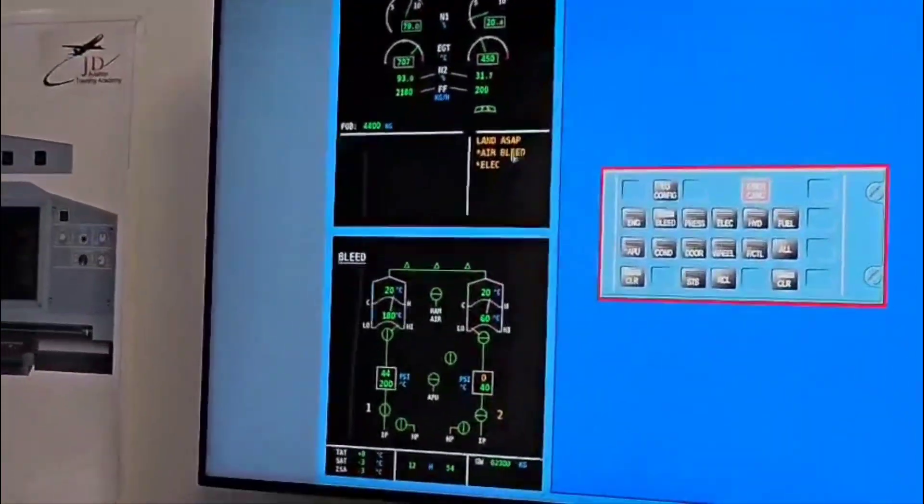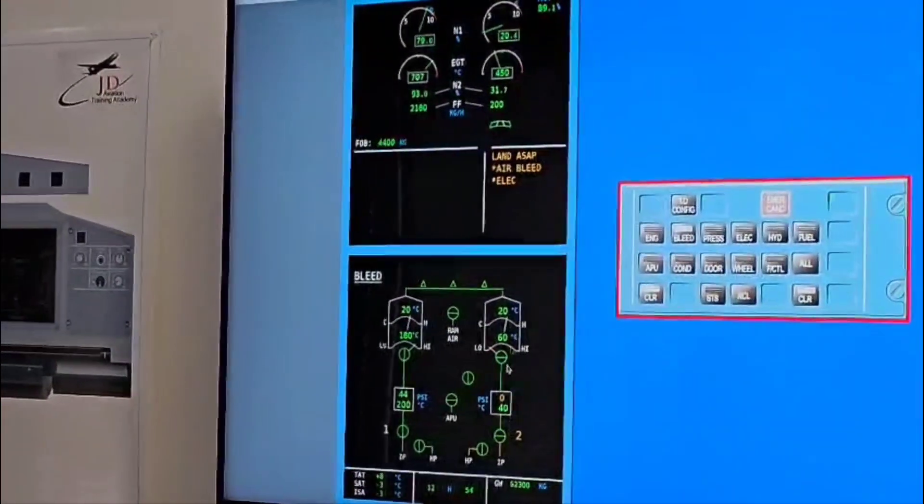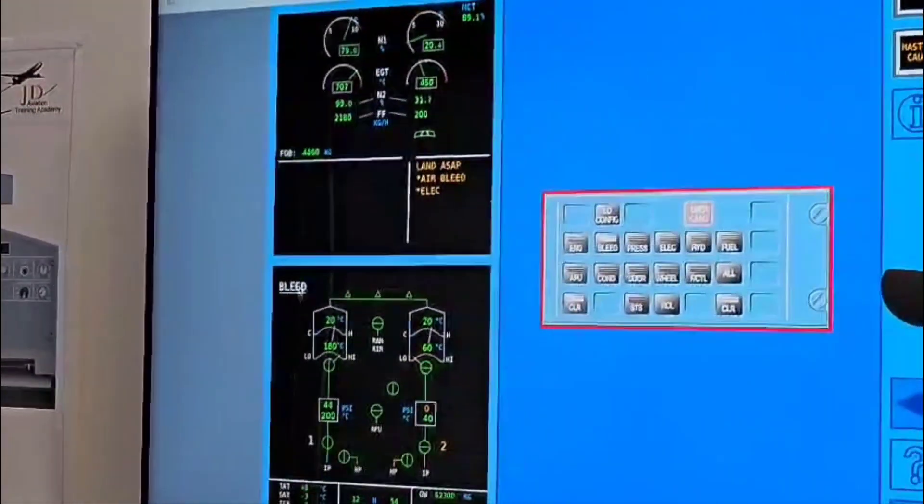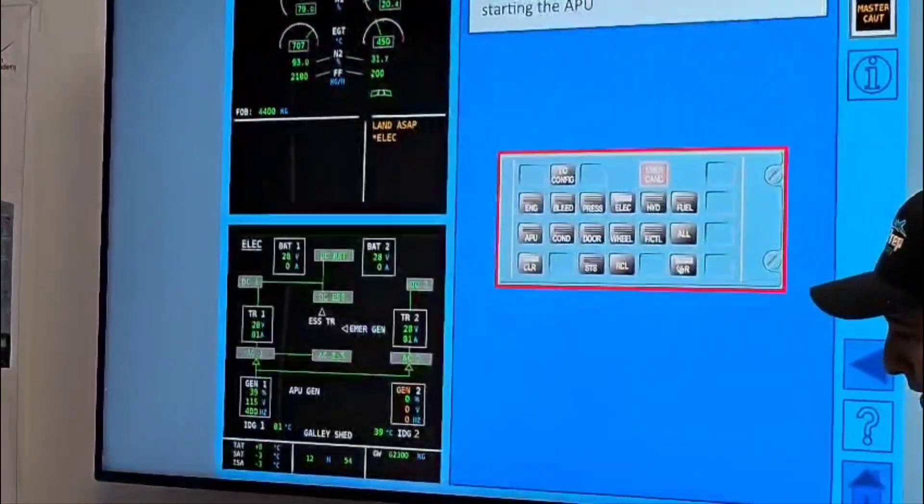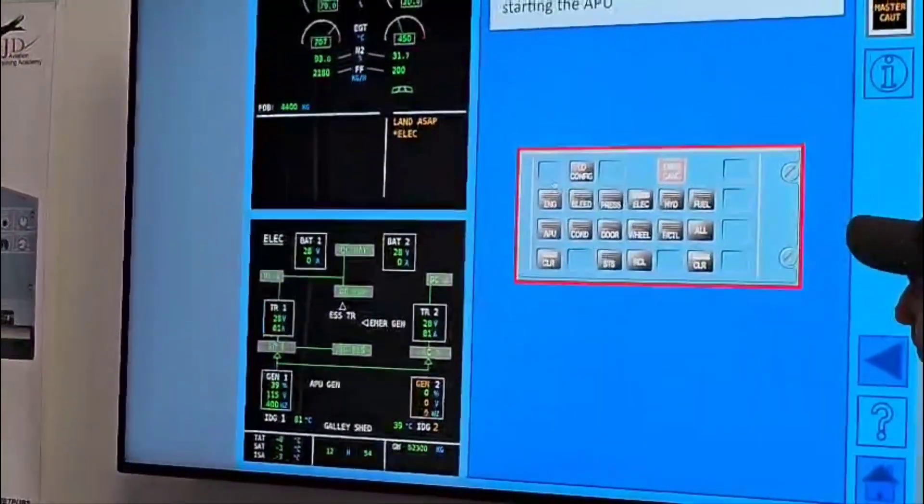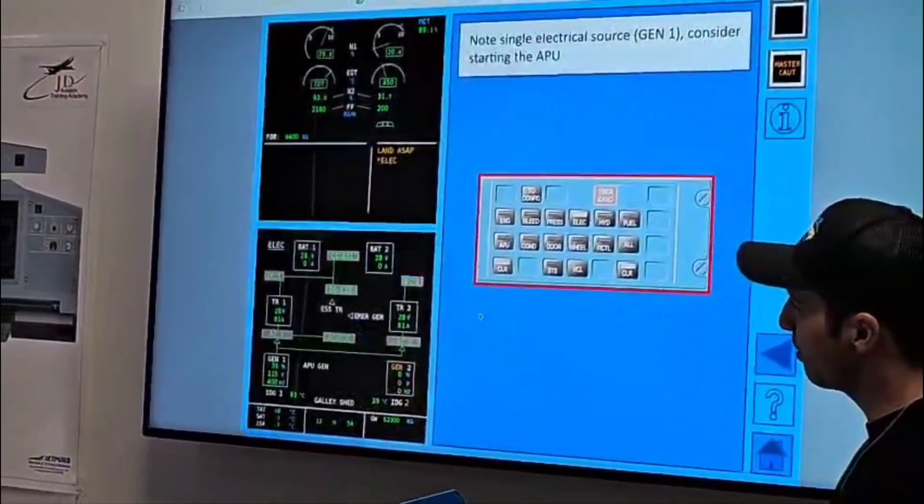Land ASAP amber is land as soon as practical. Air bleed number two, pack offline, number one picked up the load. Clear bleed. Then ELEC comes up, number two generator offline, number one picked up the load. Clear light.